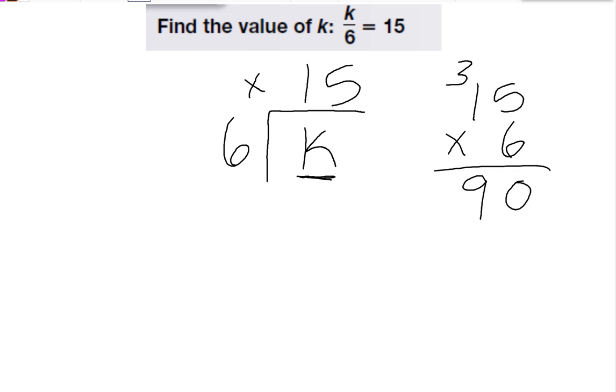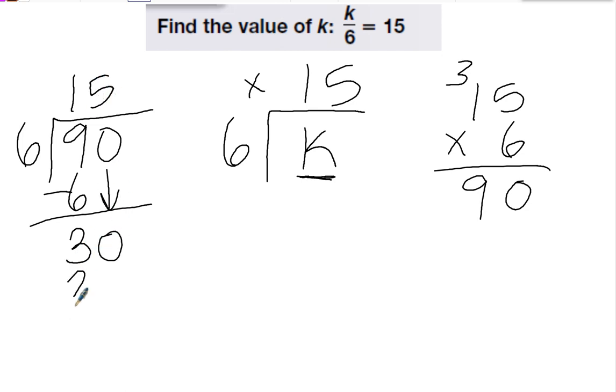I can always check by dividing. 90 divided by 6. 6 goes into 9 one time. That's 6. Subtract. 9 minus 6 is 3. Bring down the 0. 6 goes into 30 five times. So my answer is correct. So remember, when the dividend, or the number inside the box, is missing, you multiply to find it.